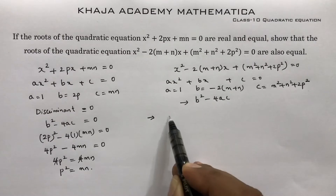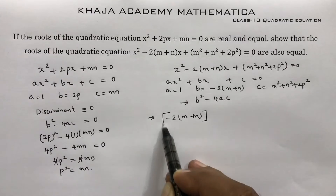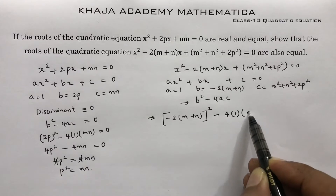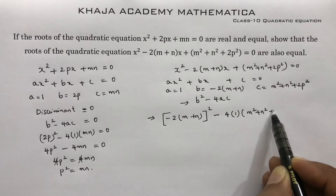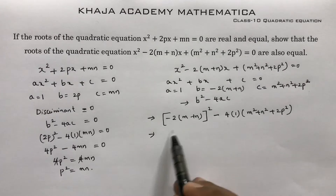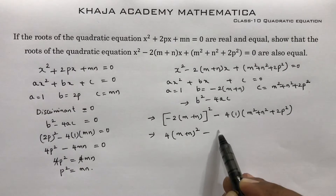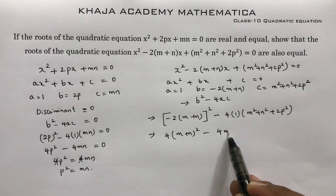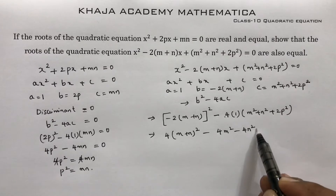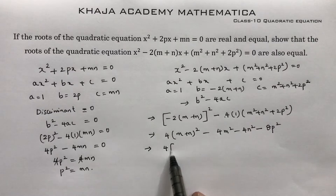Substituting into b² - 4ac: [-2(m+n)]² - 4(1)(m² + n² + 2p²) = 4(m+n)² - 4m² - 4n² - 8p².